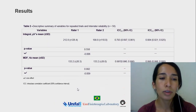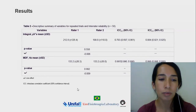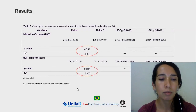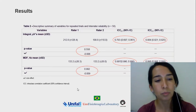For inter-rater reliability, no statistical evidence of difference between the three repetitions was observed for both the integral and the medium frequency. Excellent reliability was observed for both variables, being higher for medium frequency than for the integral, and higher values of ICC 2.3 than ICC 2.1 as well.